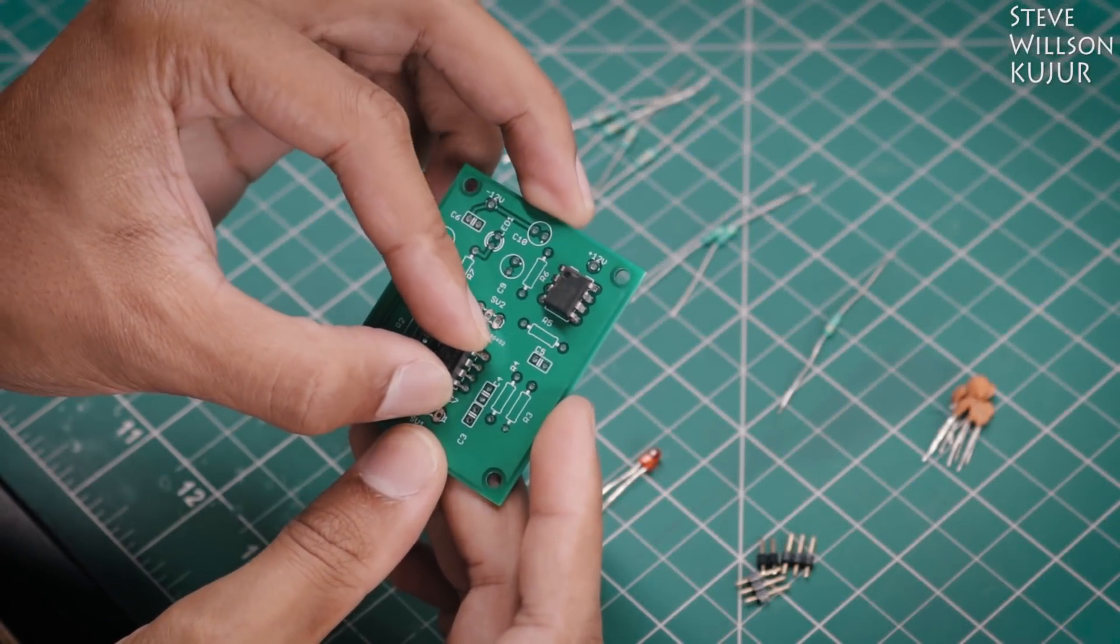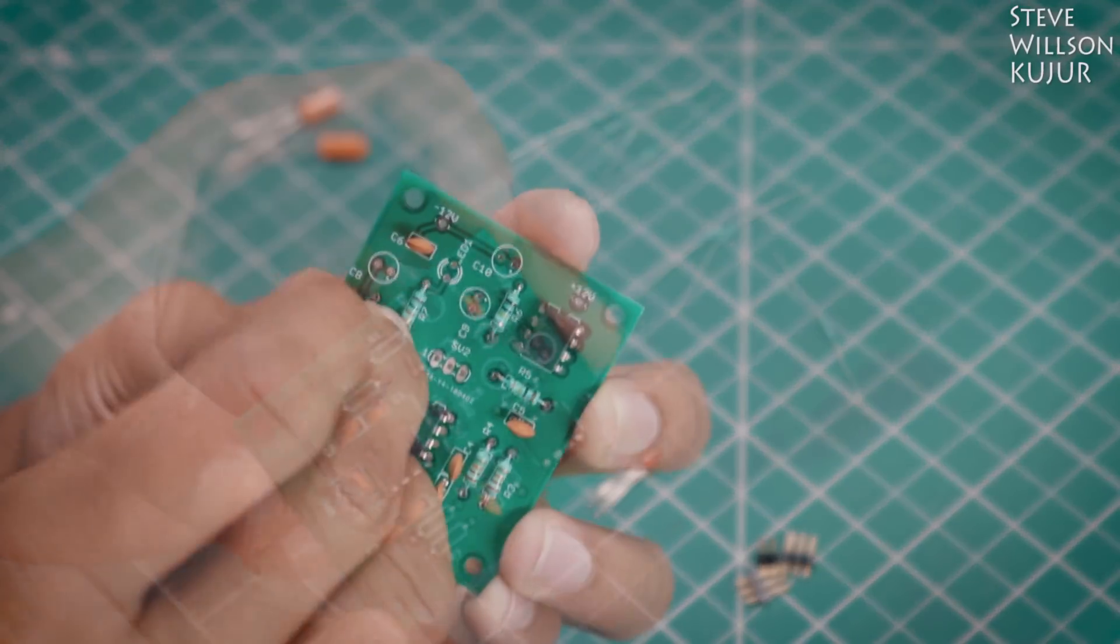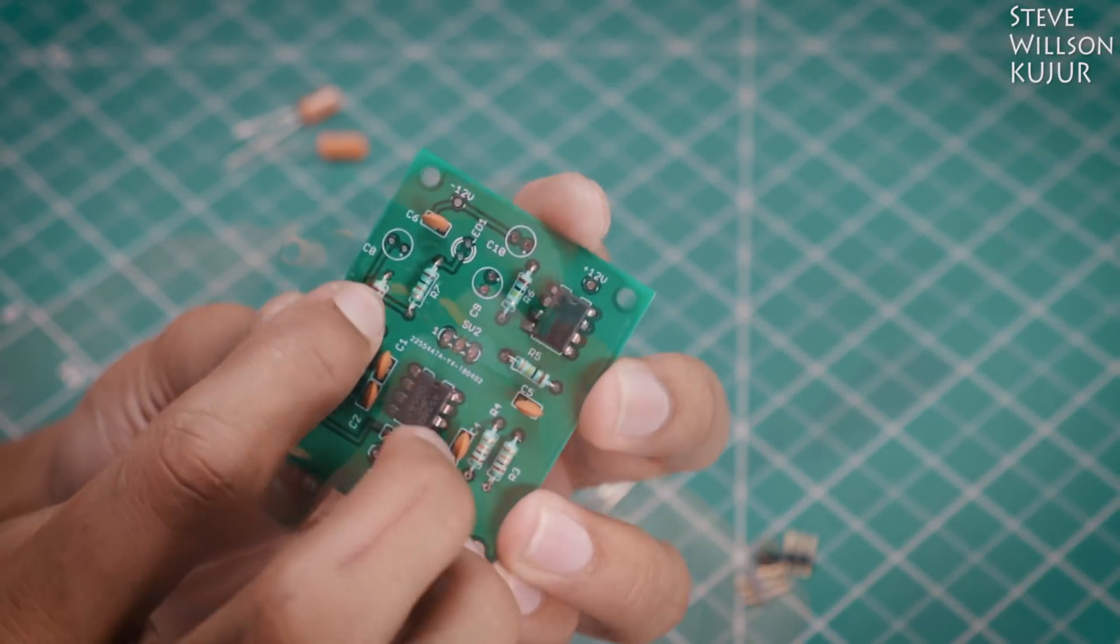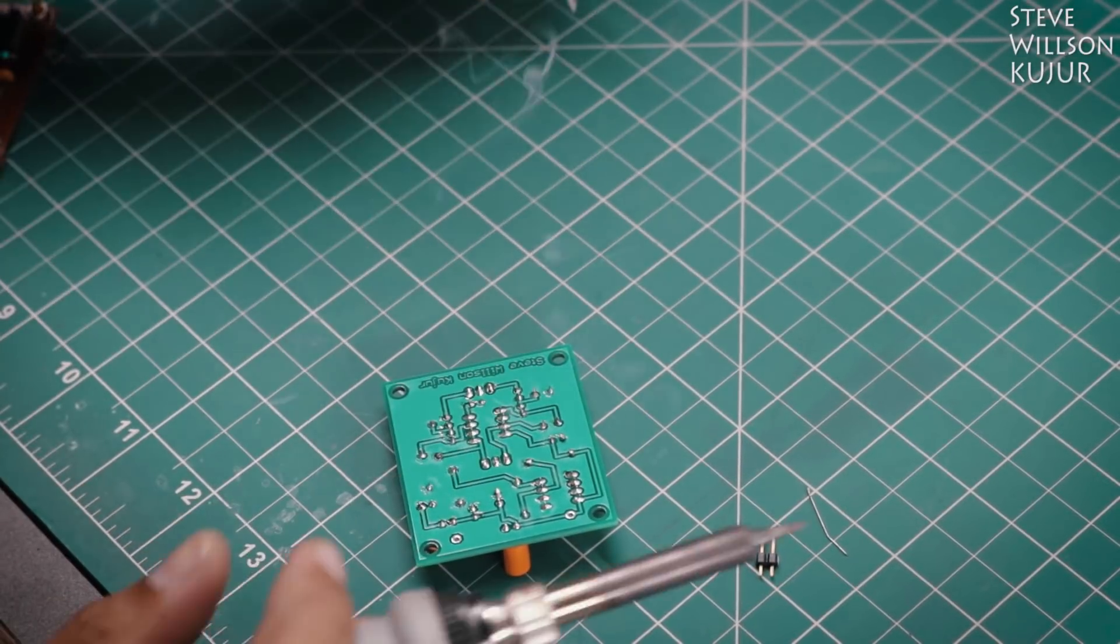First I soldered the op-amps and then I soldered the 100nF capacitors and then soldered all the resistors and then soldered the big capacitors and then soldered the LEDs and the male headers.